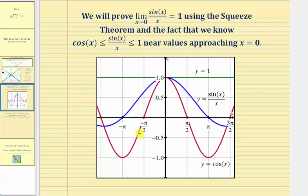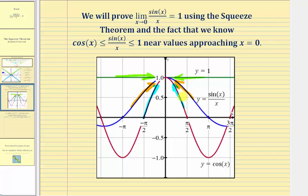Before we write this out more formally, notice that since the limit as x approaches zero of cosine x is equal to one, and the limit as x approaches zero of one also equals one, we can see from this graph the limit as x approaches zero of sine x divided by x will also equal one.